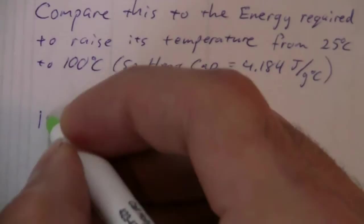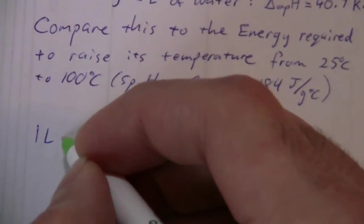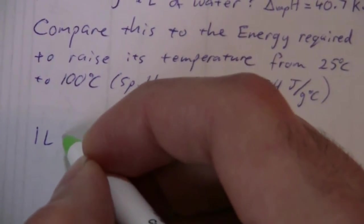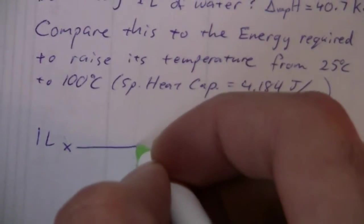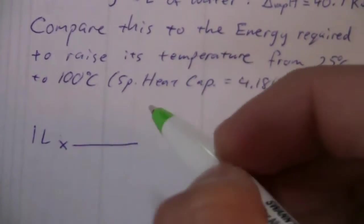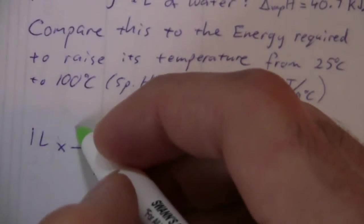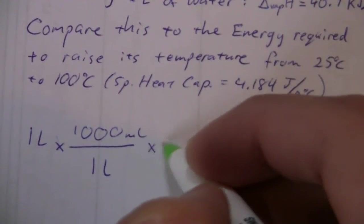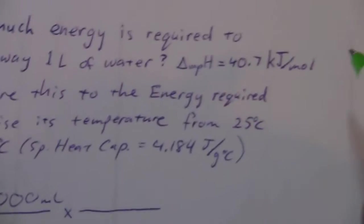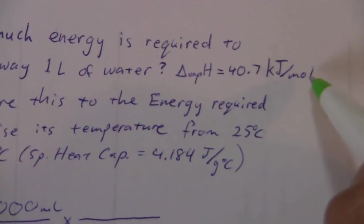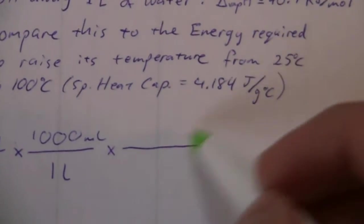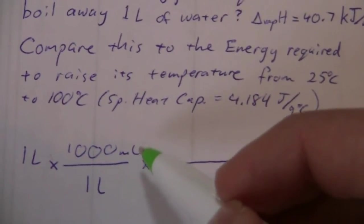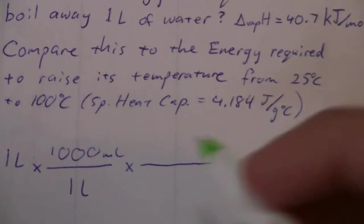So then it becomes a question of how many moles of water do we have. And then we can just multiply that by the 40.7 kilojoules per mole, and that will tell us how many kilojoules are required. So, one liter of water. And we can just do a little conversion. One liter is 1,000 milliliters. And then what are we going to need in order to get this into moles so that it will cancel? We need to get first to grams and then to moles.